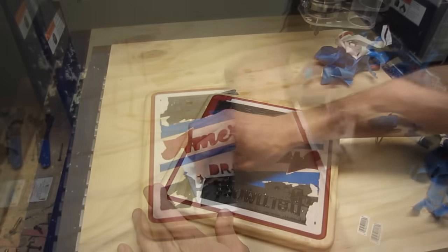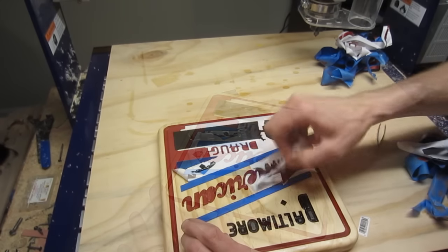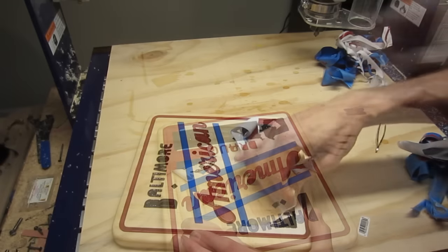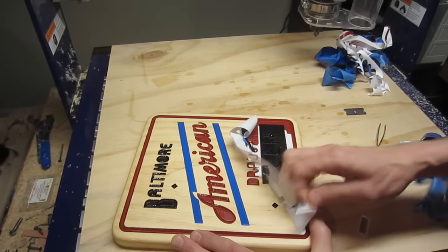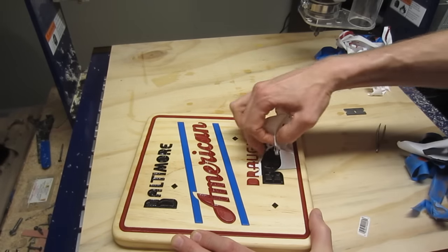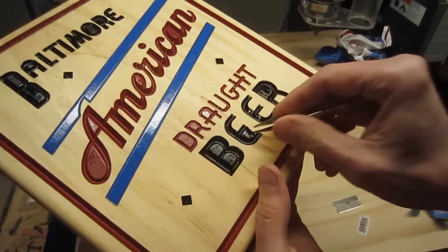Once the last coat of paint is dry, the mask can be removed. Some of this can be done by hand, but I find a single-edge razor blade is really helpful in getting the vinyl started in places. A pair of tweezers also comes in handy.